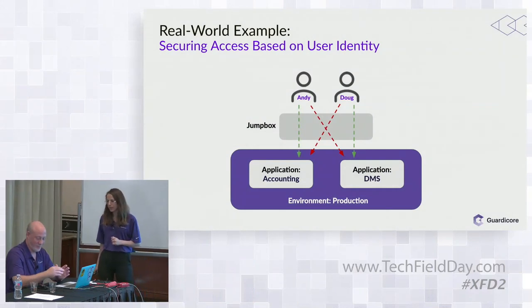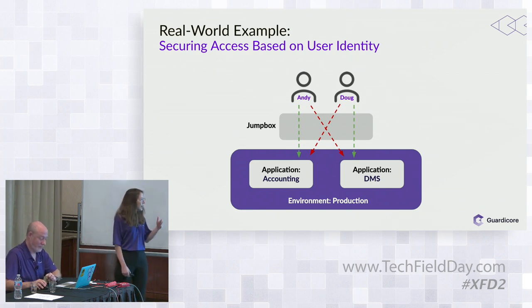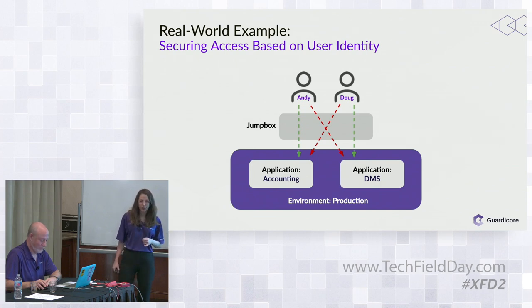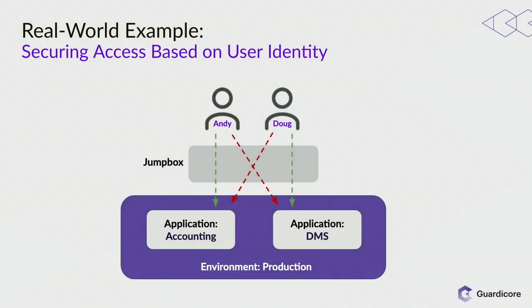By comparison, a whitelist-only model would require labeling everything, taking months and thousands of rules. A customer at a recent advisory board said this feature reduced their costs on terminal and jump boxes by 60%. The next demo adds user identity rules to the jump box use case — showing how contractors Andy (3D Analytics, needs accounting access) and Doug (DevOps and Sons, needs DMS access) can both use the same jump box and access only their relevant applications.